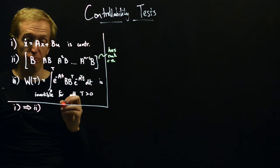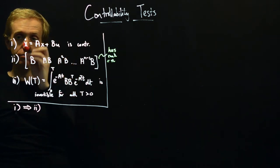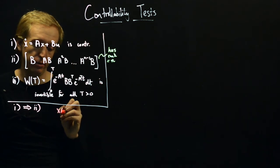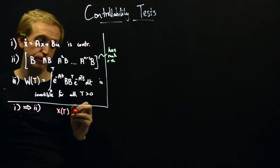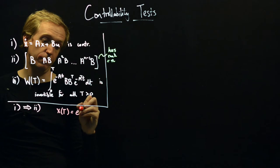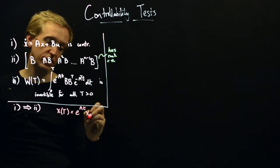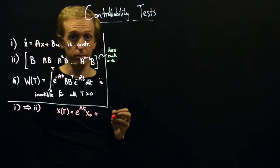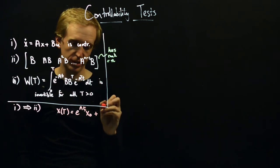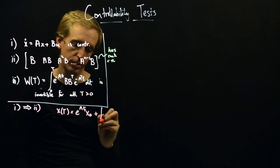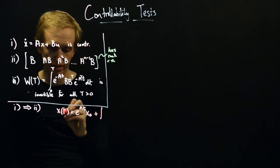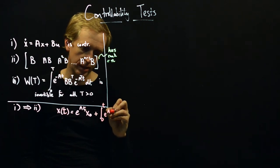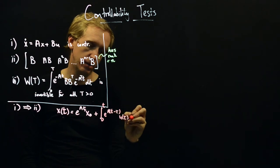Let's start with the formula for the response of the system. The value of the state at time T equals e to the AT times x0 — the response to the initial condition — plus the convolution integral from 0 to t of e to the A(t minus tau) times u(tau) d-tau, which is the response caused by the input.